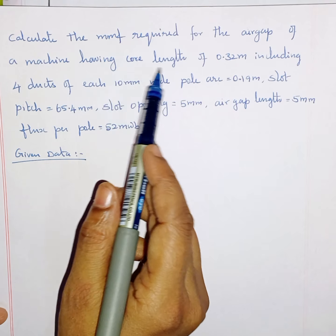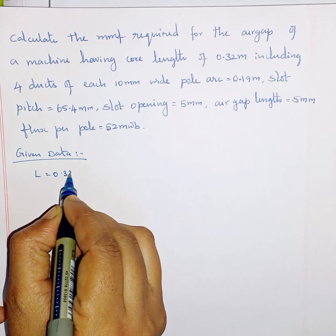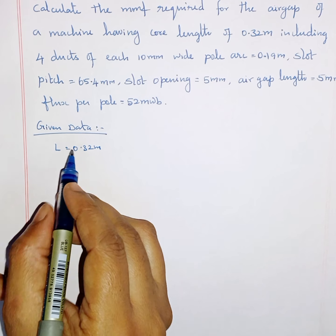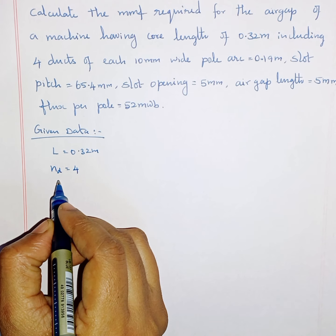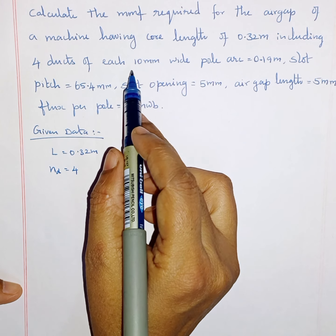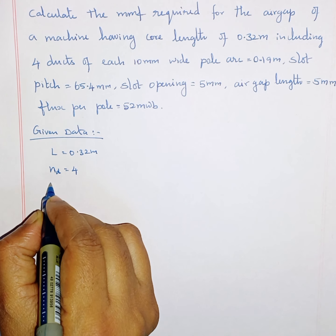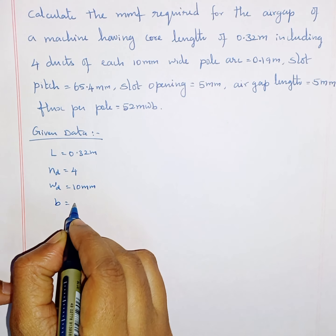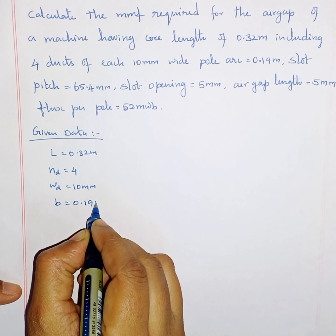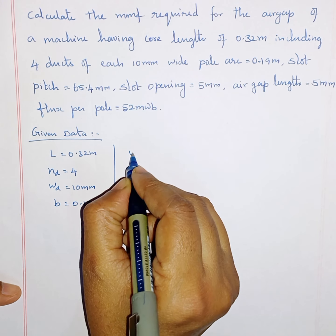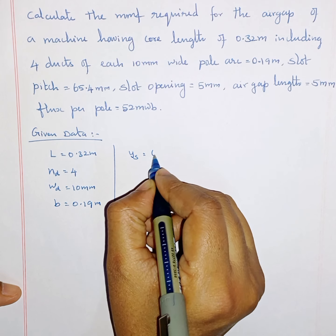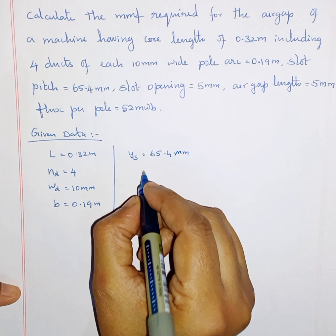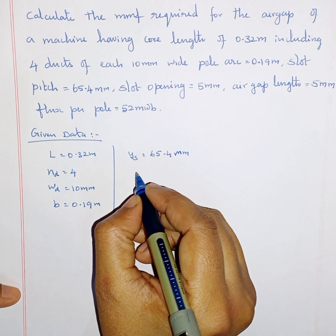Given data: core length L is equal to 0.32 meter including four ducts, so number of ducts ND is equal to 4, each 10 mm wide so width of the ducts is 10 mm, and pole arc B is given as 0.19 meter, and slot pitch YS is given as 65.4 mm.